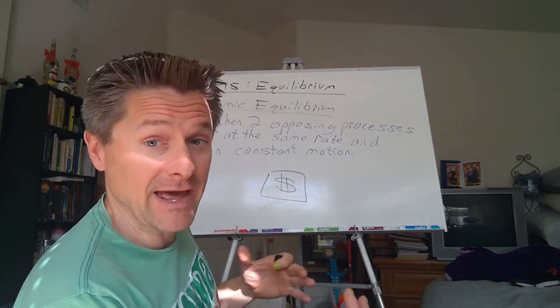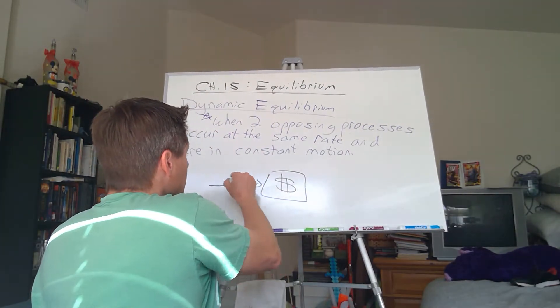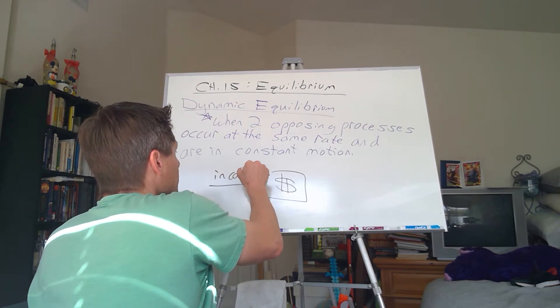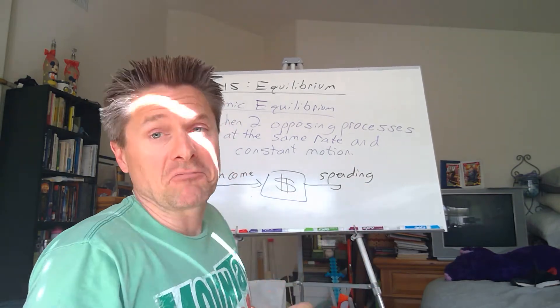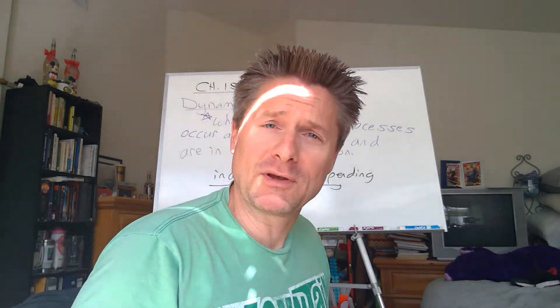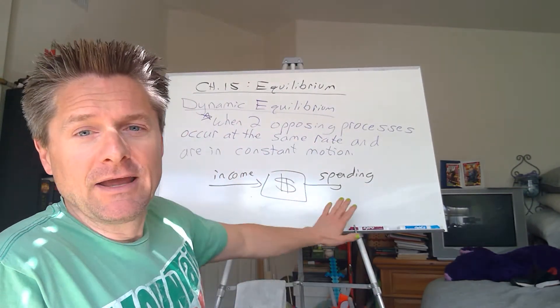And you've got two essential things. You've got income coming in. And you've got your spending going out. So I would call that two opposing processes. You're making your money. You're spending your money.